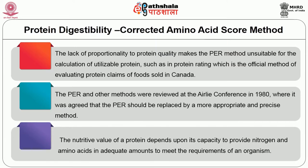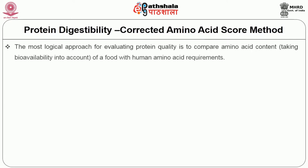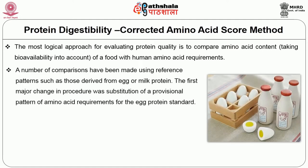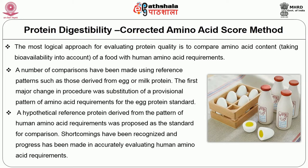The nutritive value of protein depends on its capacity to provide nitrogen and amino acids in adequate amounts to meet the requirements of an organism. In theory, the most logical approach for evaluating protein quality is to compare amino acid content — taking bioavailability into account — with human amino acid requirements. Comparisons have been made using reference patterns derived from egg or milk protein. The first major change was substitution of a provisional pattern of amino acid requirements for the egg protein standard, proposing a hypothetical reference protein derived from human amino acid requirements as the standard.